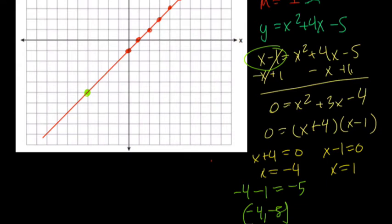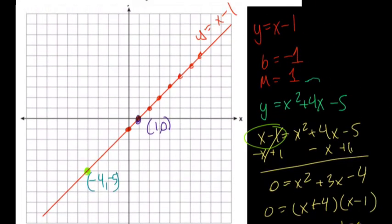Okay, negative 4, negative 5. The other point is when x equals 1. So 1 minus 1, x minus 1 equals 0. The other point is 1, 0. So that's this point right here. Our other meeting point, 1, 0. So we're almost done. Now, all we have to do is find the vertex of the quadratic.